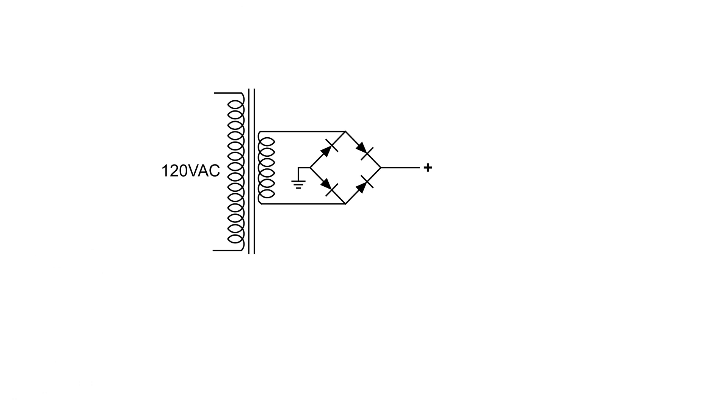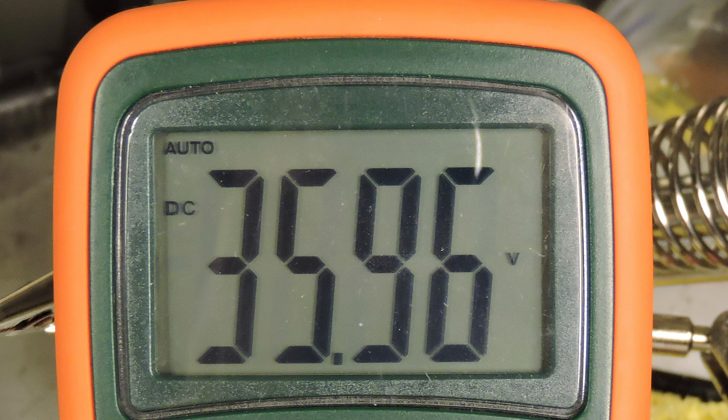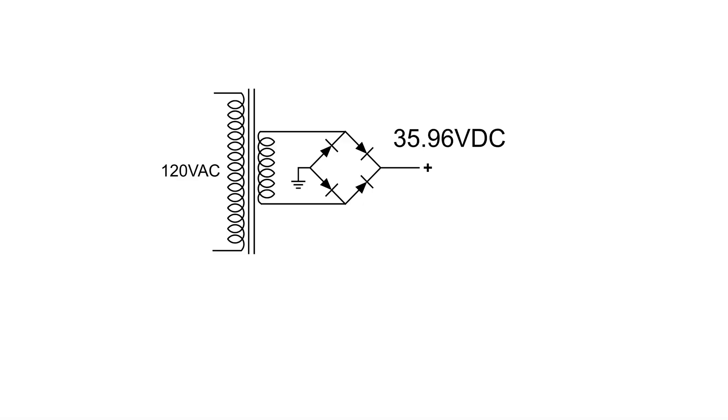And here's the diagram so far. We've just got 120 volts AC in. And I measured the DC through the rectifier. And it of course reads 35.9 volts or 36 volts.